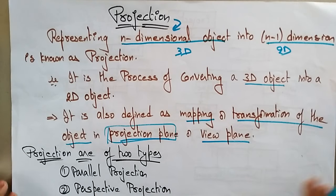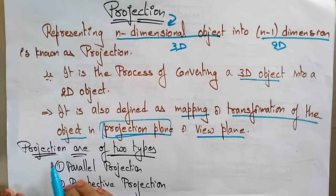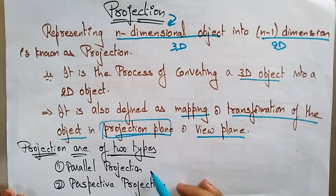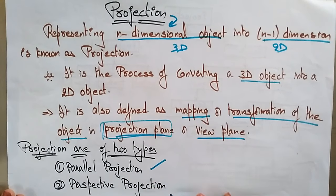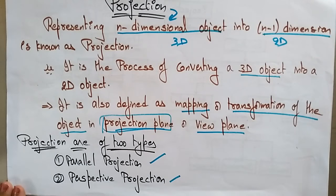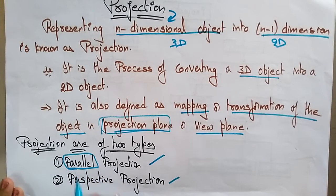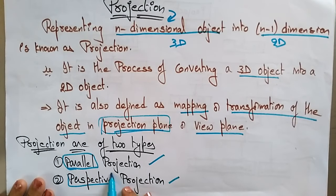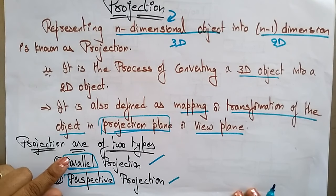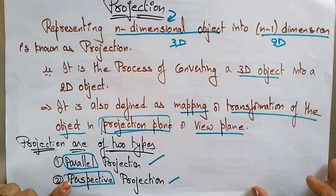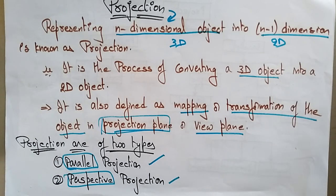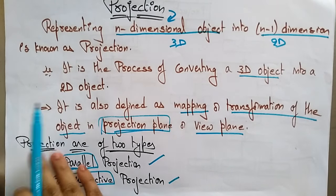Projection is of two types: one is parallel projection and another is perspective projection. Whenever you are talking about projection, you have to think there are two different types — one is parallel and another is perspective. In this video I want to explain what is a parallel projection and what is a perspective projection.